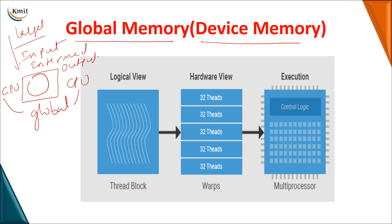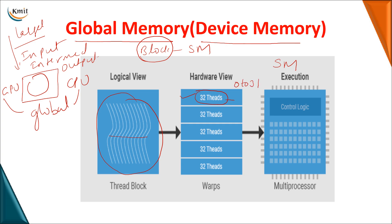In execution, you assign a block to a streaming multiprocessor. A block is a collection of threads. When a thread block is assigned to a streaming multiprocessor, the threads are grouped into collections of 32, with thread IDs ranging from 0 to 31. For example, if you have 214 threads, they are divided by 32. Each collection of 32 threads is called a warp — the basic execution unit.